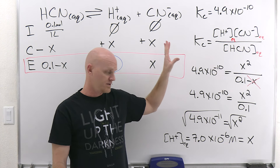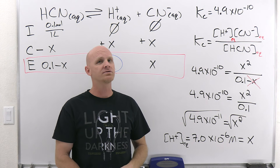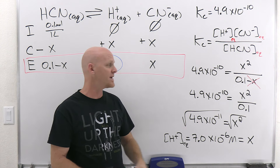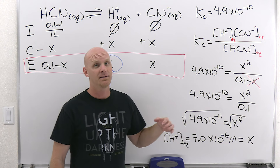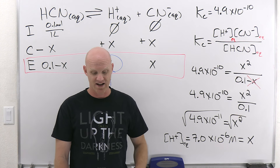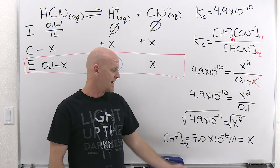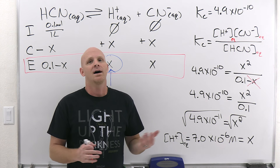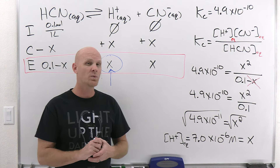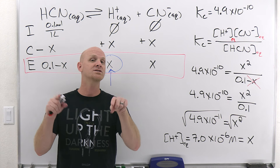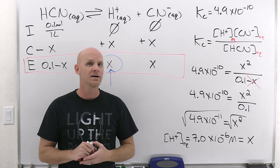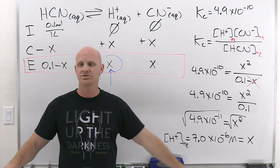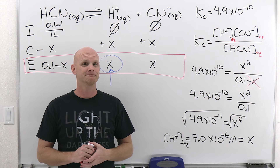If you used a quadratic and didn't ignore that minus X, you'd come out with almost exactly the same value — 7 times 10 to the negative 6 molar. So this is another example of a place where we can get around the quadratic, and where you're expected to know that you can get around it, even if you've been told no quadratics on the exam, as a lot of you will be.